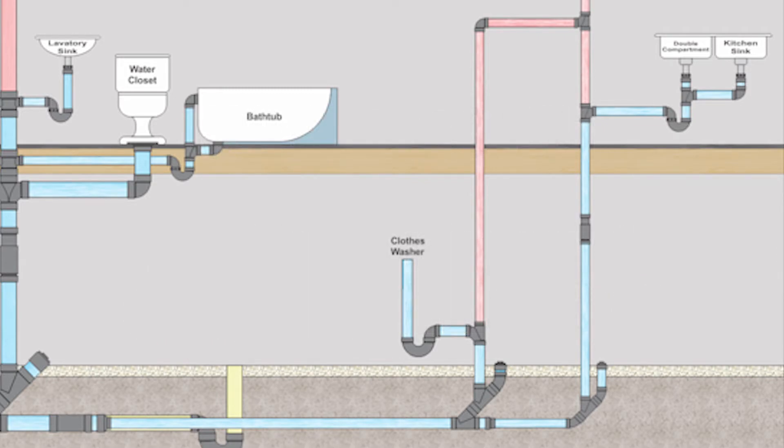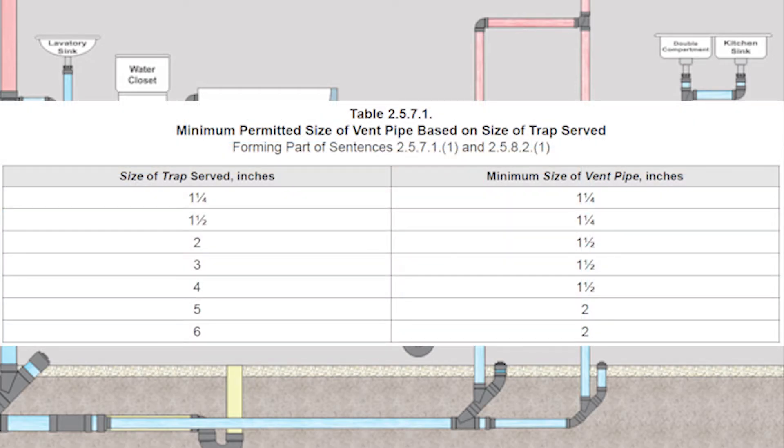Now as we move beyond the basic videos we're going to learn about more and more tables for sizing venting and all the nuances around that. But for right here and now we're just going to stick to table 2.5.7.1 because for the most part it's going to be able to size up almost every single vent that we need for a basic home design.